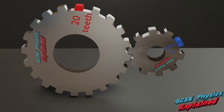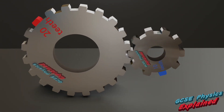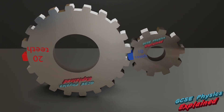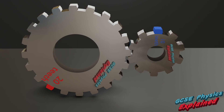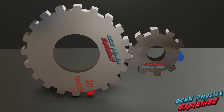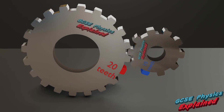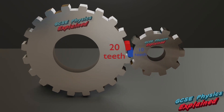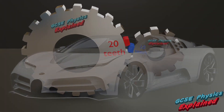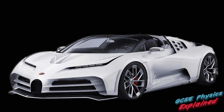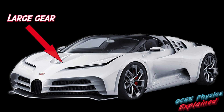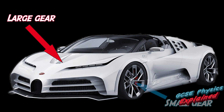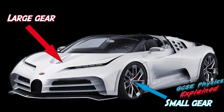You can see from this animation that as the big gear turns, it makes the small gear turn. In this example, the large gear is connected to the engine and the small gear is connected to the wheels.